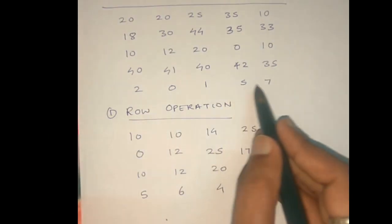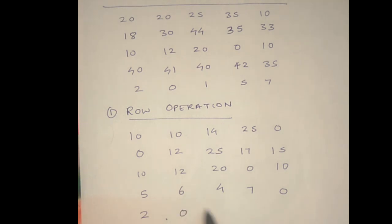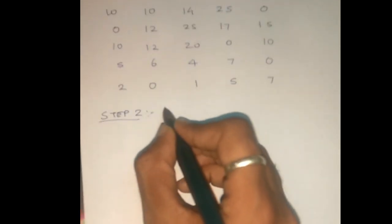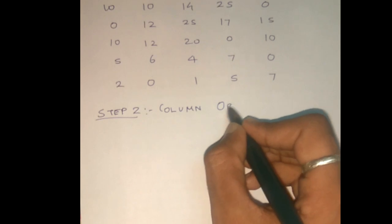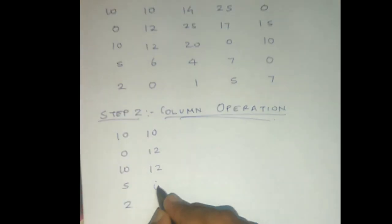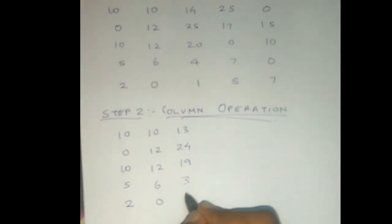The next step is column operation. In the column operation, we find the least number in each column and subtract it. Column values give: 10, 0, 10, 5, 2; then 10, 12, 12, 6. The least number is subtracted: 13, 24, 19, 3, 0.